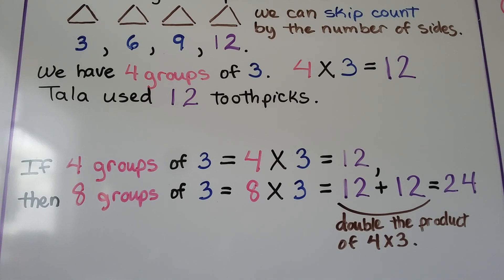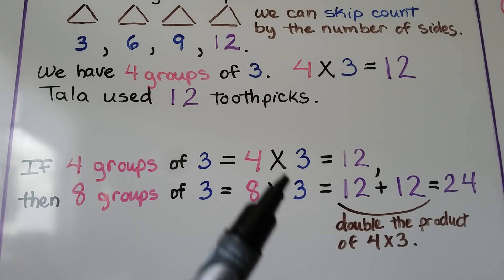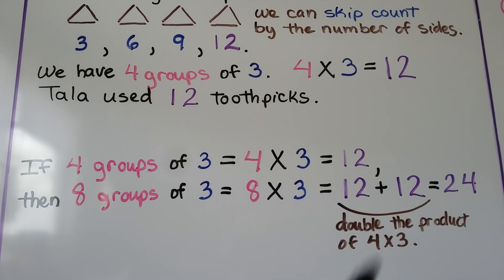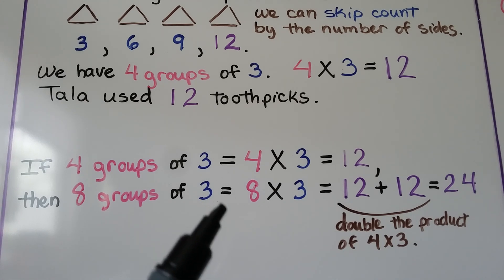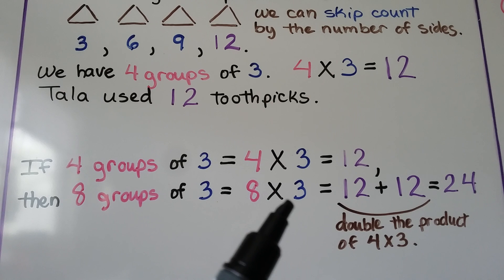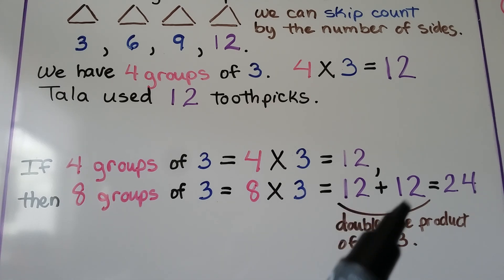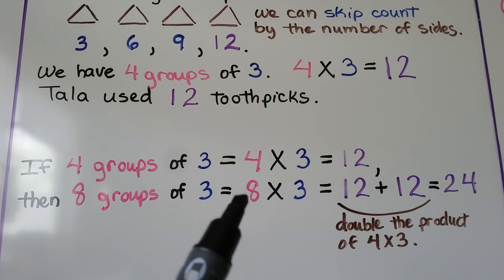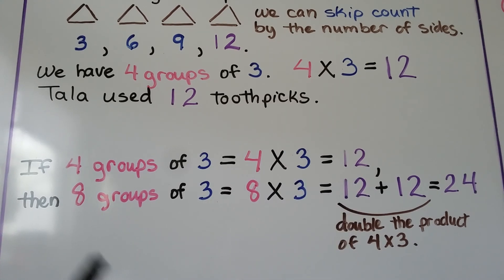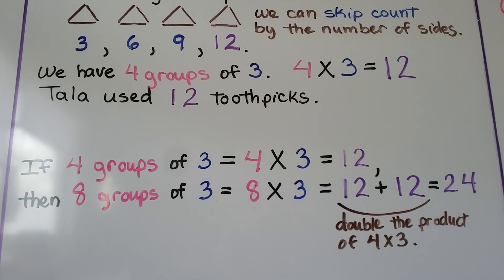If 4 groups of 3 is equal to 4 times 3, which is equal to 12, then 8 groups of 3 is equal to 8 times 3, which is equal to 12 plus another 12. We did 4 times 3 twice by making it an 8, because 4 plus 4 is 8. That equals 24. We doubled the product of 4 times 3 to help us find 8 times 3.